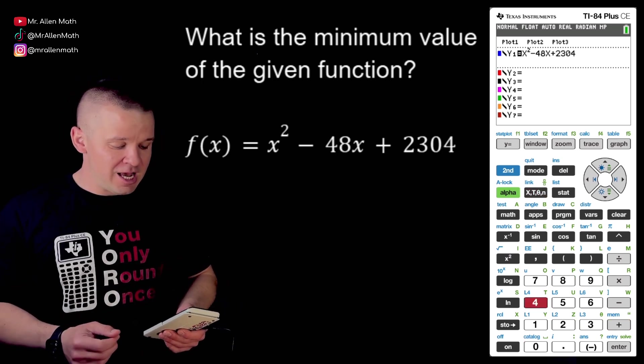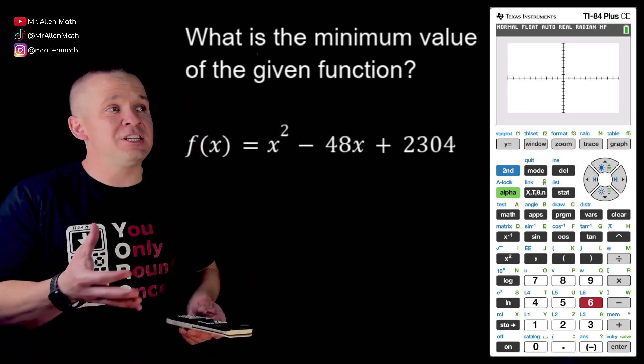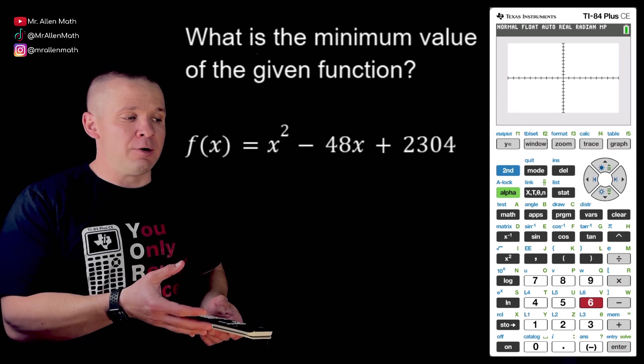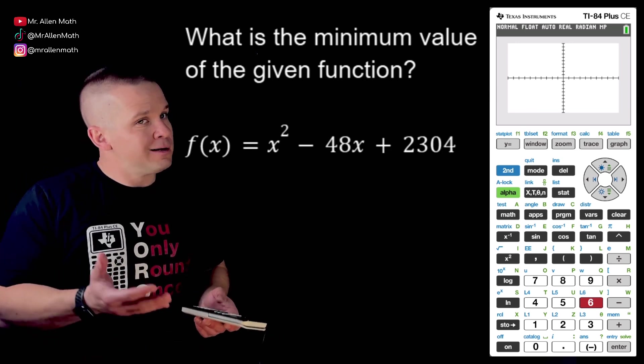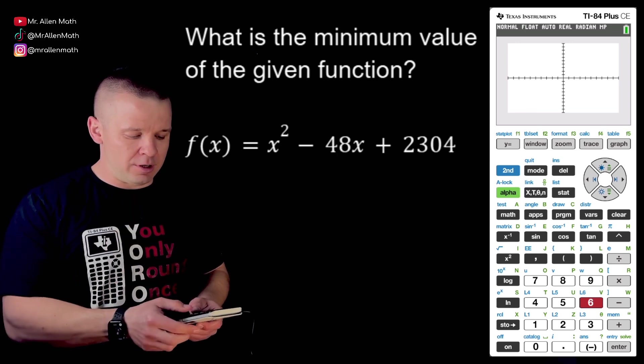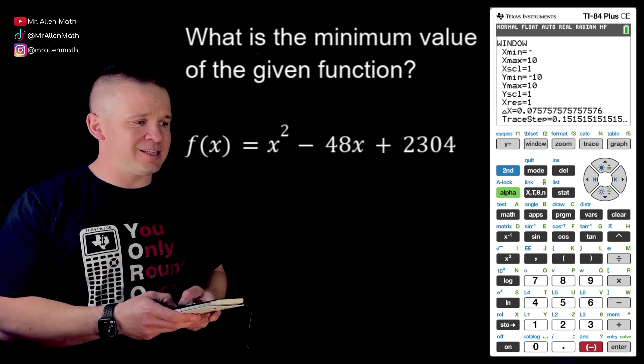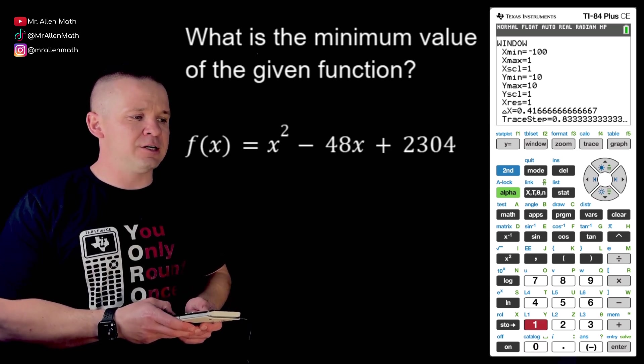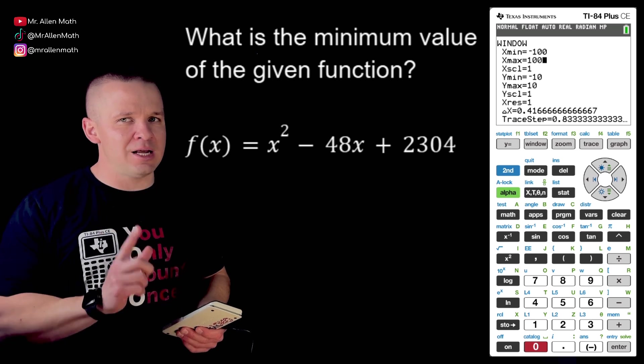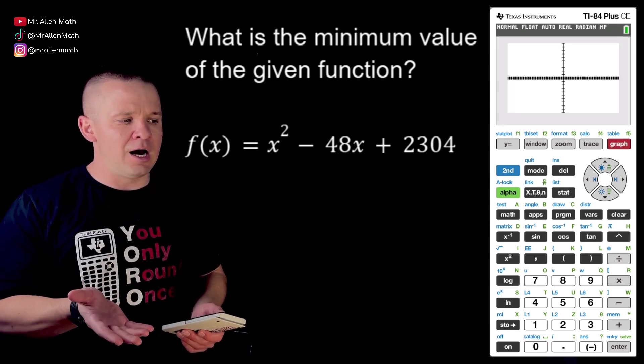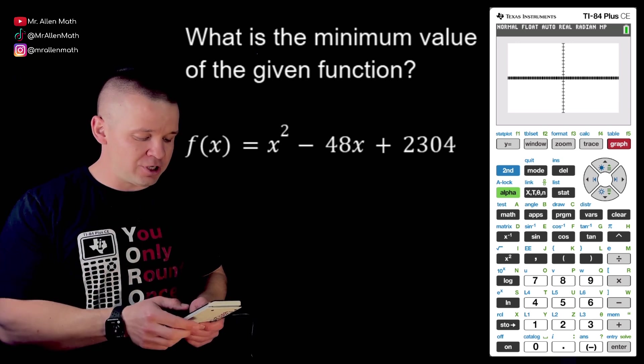Now unfortunately if I were to go to zoom 6, zoom standard, I'm not going to see anything. They often give you these types of problems knowing that you might try to graph it and you might not know how to adjust things. So it takes a little bit of skill here but here's what I'm going to do. I'm going to set these to like let's say negative 100 and positive 100. Now if I graph this I'm still not going to see what I need. Thanks but no thanks.